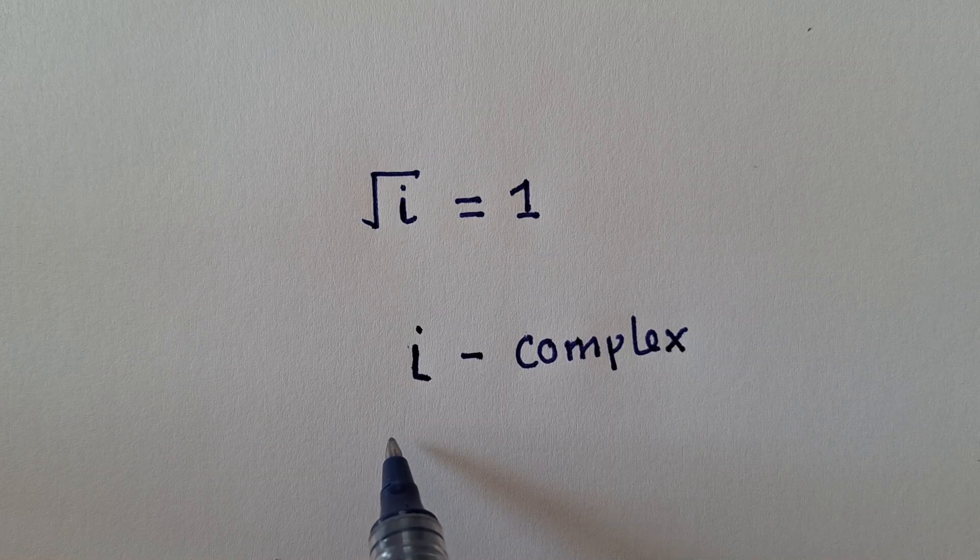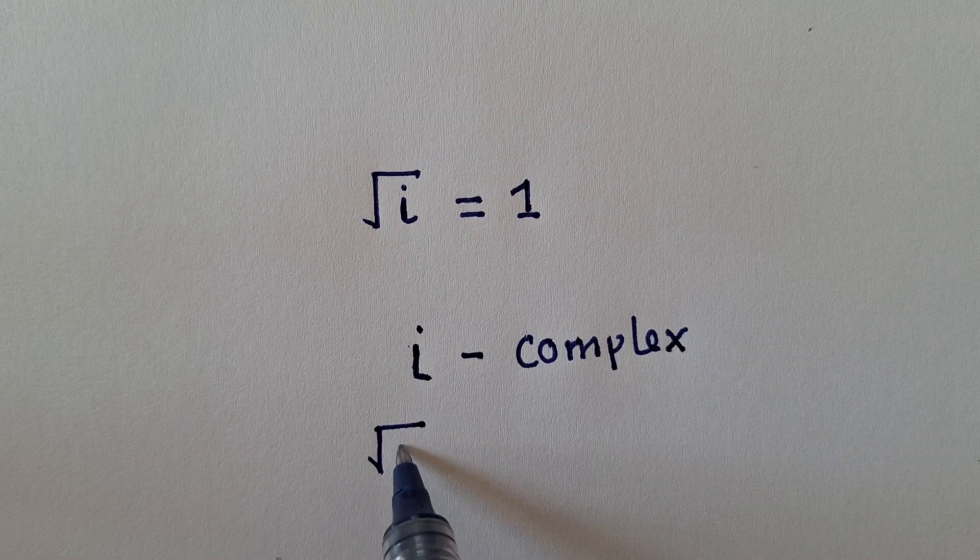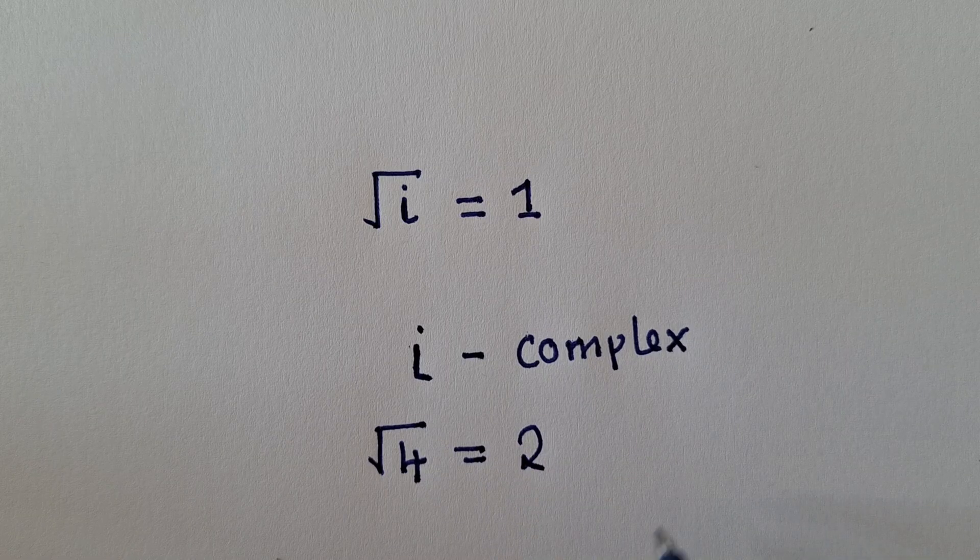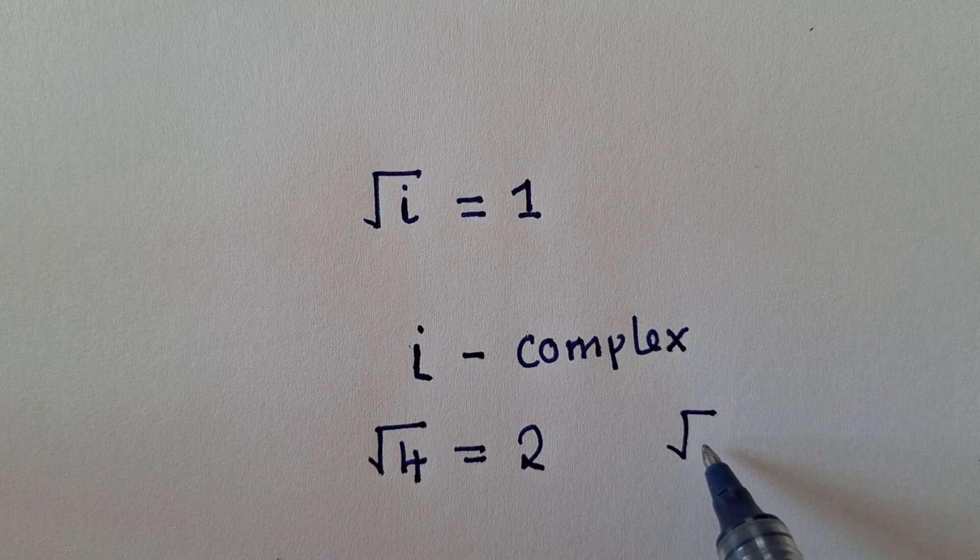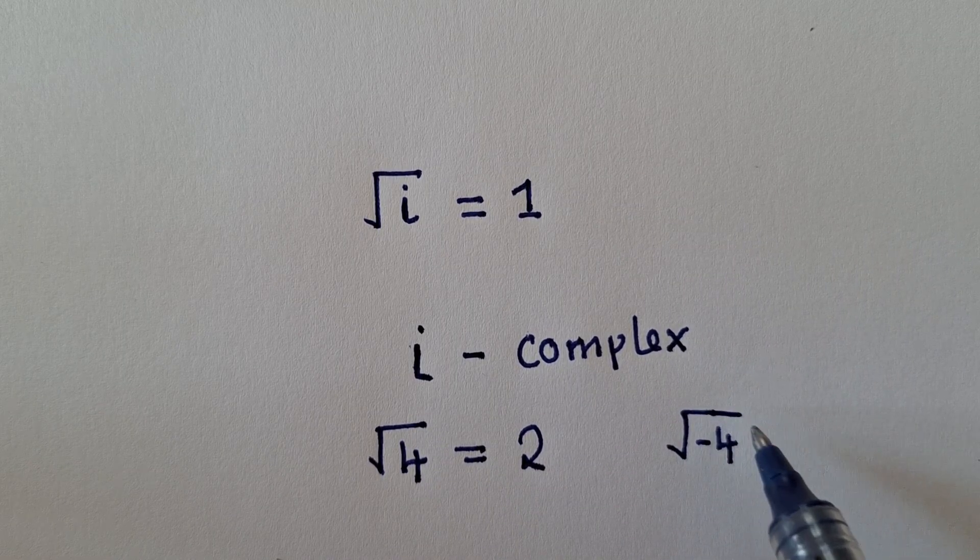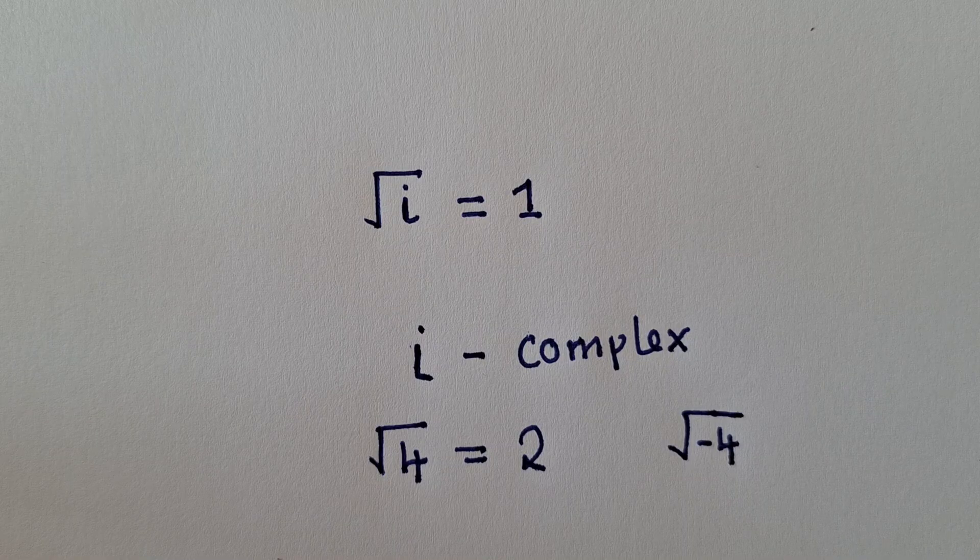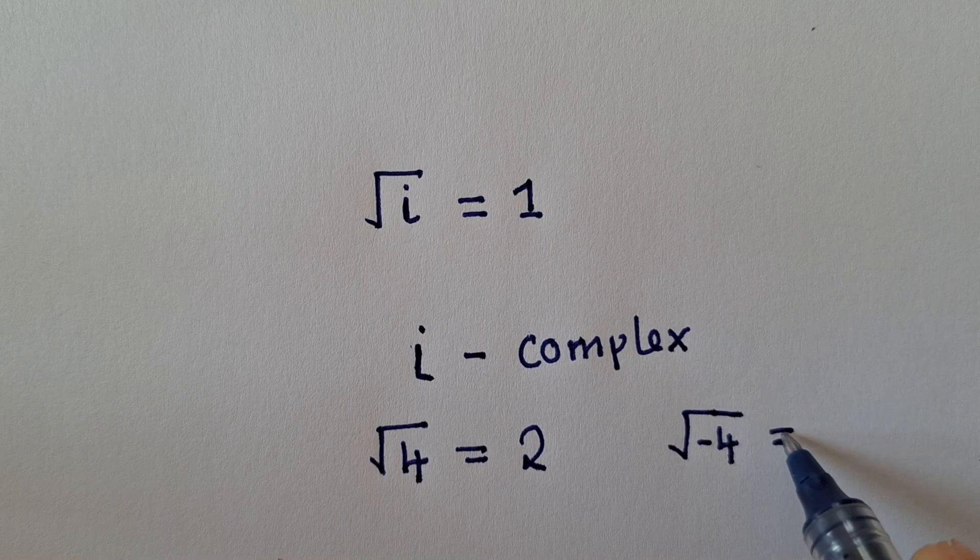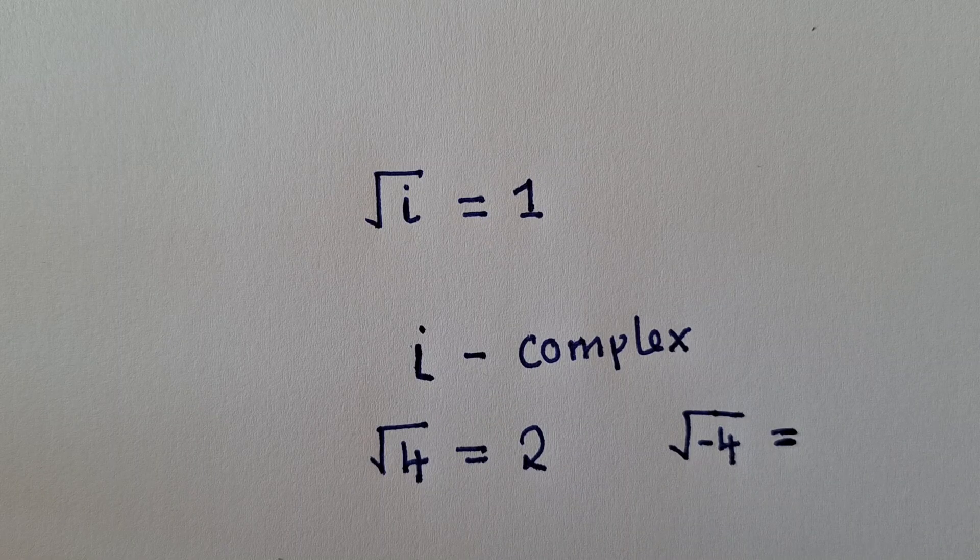So for example, when I ask you to find the square root of 4, of course you're going to say it's 2. But what about the square root of negative 4? When you punch on your calculator, it will give you math error. And this is where the i comes in.